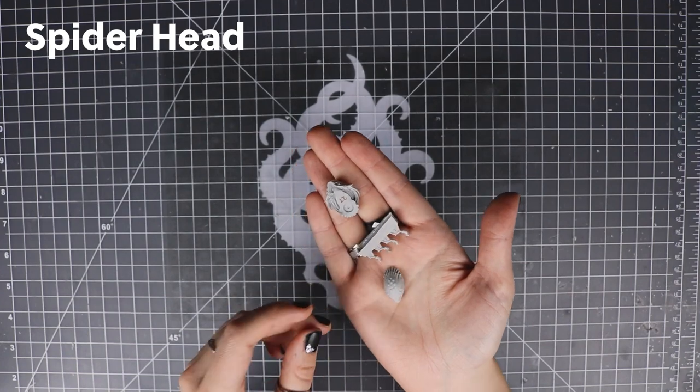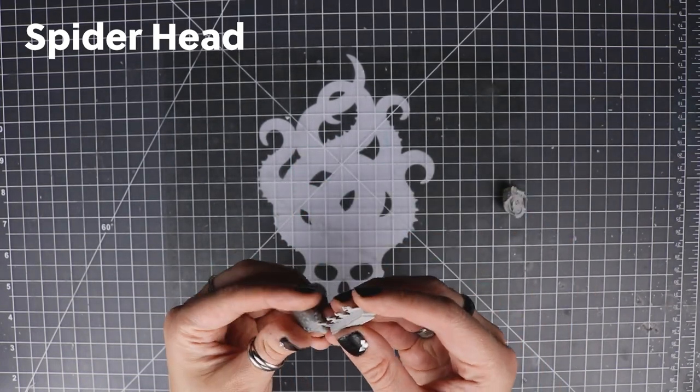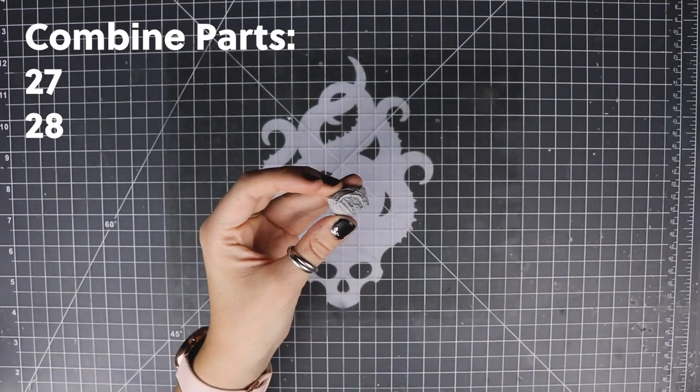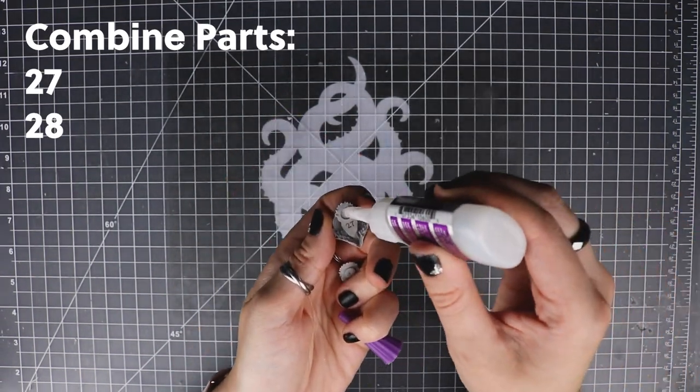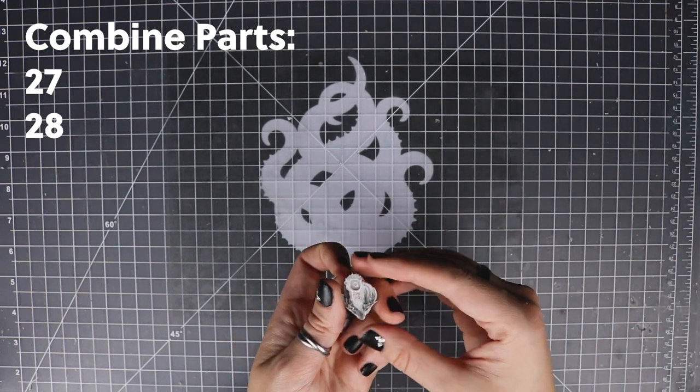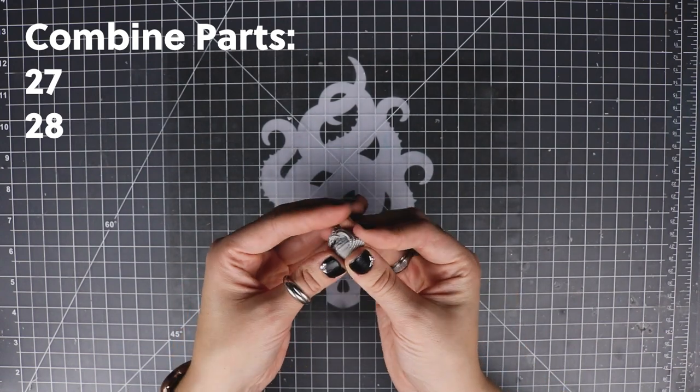Now the spider head. The spider head has all those little things, and I didn't cut them off the sprue, and I'll show you why in a minute. First, we fit the two halves of the main head together. Pretty straightforward. Just make sure that the glue is evenly distributed. I had to remove a little bit.